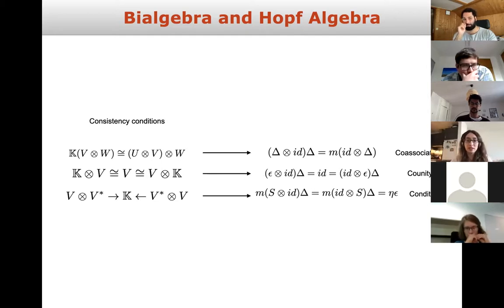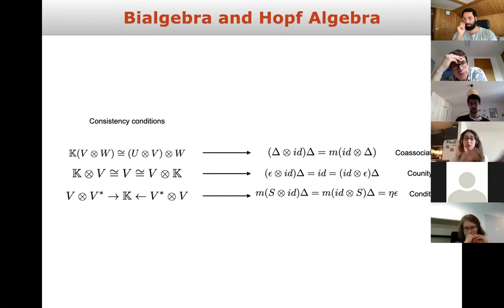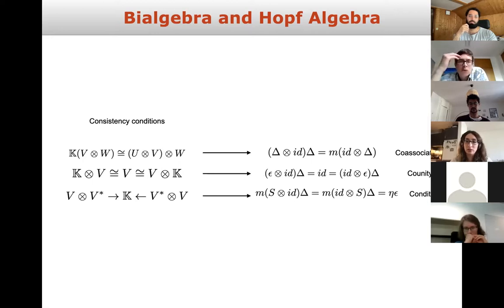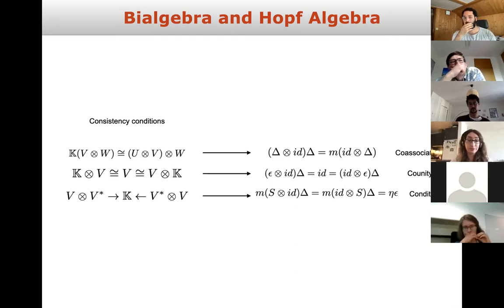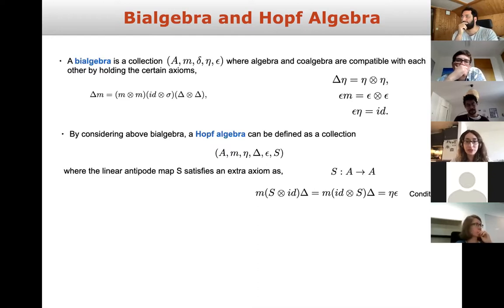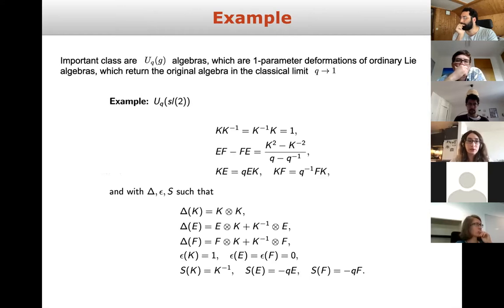I want to show a few of these axioms — they look complicated at first, but comparing them with properties we have in groups, they are actually not complicated. They are just translations of the consistency conditions we have in groups, now expressed in Hopf algebra language. The co-associativity, co-unitarity, and the Hopf algebra condition all have very similar behavior to consistency conditions in normal groups.